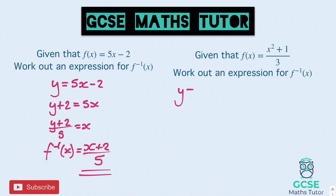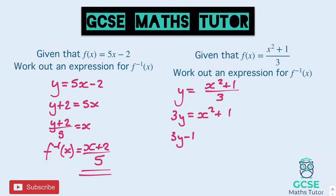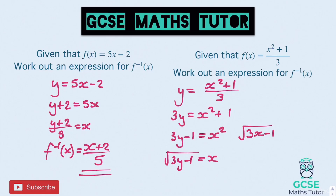On to the next one. Write it as y equals, so y equals x squared plus 1 over 3. Times both sides by 3, we get 3y equals x squared plus 1. Take away 1 from both sides, so 3y minus 1 equals x squared. And then square rooting both sides would leave us with the square root of 3y minus 1 equaling x. Finish that off — swap your x and y — so we have the square root of 3x minus 1, and that equals the inverse function of f.